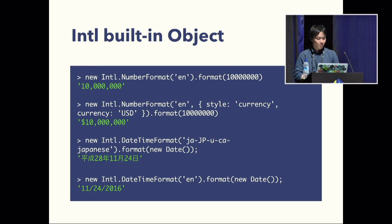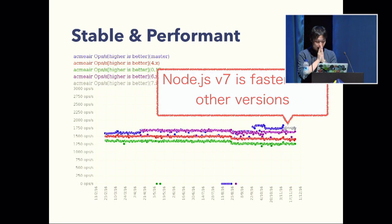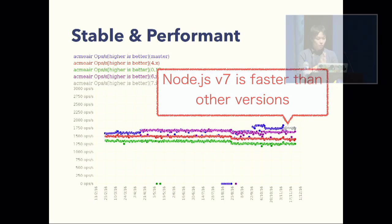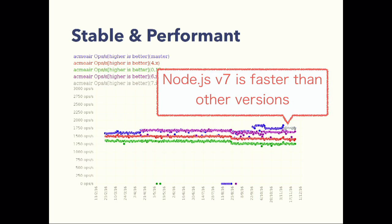You can use this — this example shows Japanese text. And next is the Node.js Benchmarking Working Group. The Benchmarking Working Group measures performance every day.